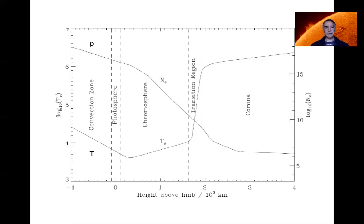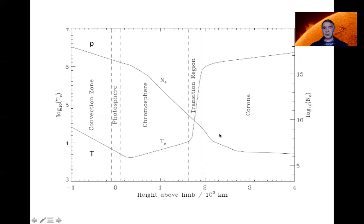Something quite dramatic happens to the temperature as you go further up in the atmosphere. As you go way up above the photosphere, instead of staying at 6000 kelvin, the temperature suddenly jumps up to a million kelvin — you can see the scale on the diagram. You suddenly have extraordinarily hot gas sitting above the visible surface of the sun, extending out tens of thousands of kilometers. But it's very low density — down by 10 orders of magnitude, a factor of 10 billion lower in density but a factor of 100 higher in temperature. This region is labeled the corona.